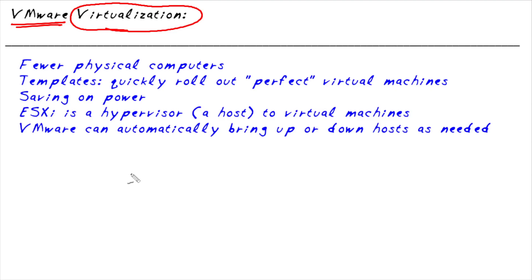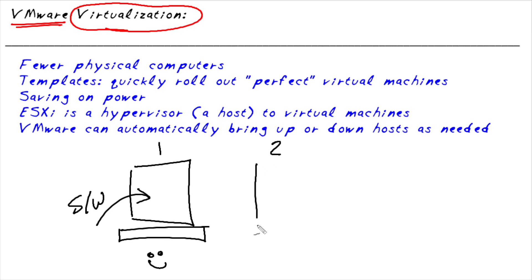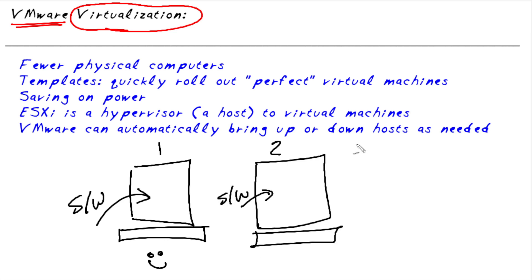Many years ago — let's say a decade ago — if we wanted to roll out servers, we would do something like this: order a physical server, it would arrive, we would install software — a web server, a SQL server, database server — and then be up and running. If we wanted a second server, guess what we'd have to do? Build another one. Same process: acquire new hardware, build the server, install the software, get it going.